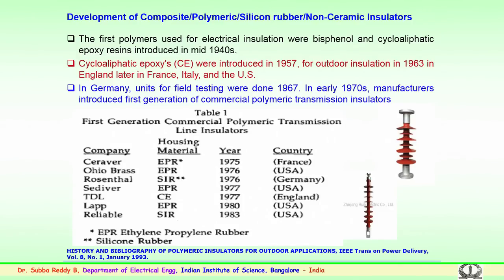A lot of changes have happened in both ceramic and glass insulators pertaining to voltage level, creepage distances, and shapes. We will now discuss the recent development over the past two to three decades: the polymer, composite, polymeric, or silicon rubber insulators — sometimes known as non-ceramic insulators.